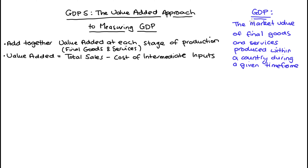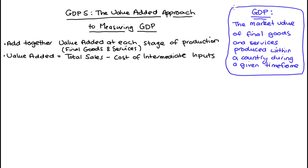Just to remind you, GDP is defined as the market value of the final goods and services produced within a country during a given time frame. The idea behind value added is that one way to get this market value of a final good or service is through adding up the value that is added at each stage of the production of that good or service.